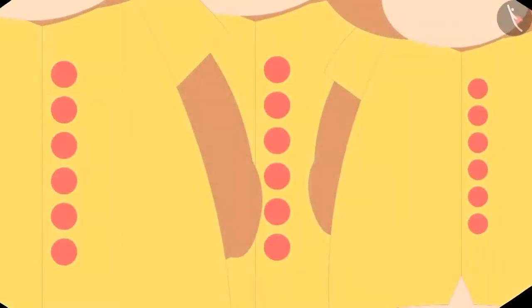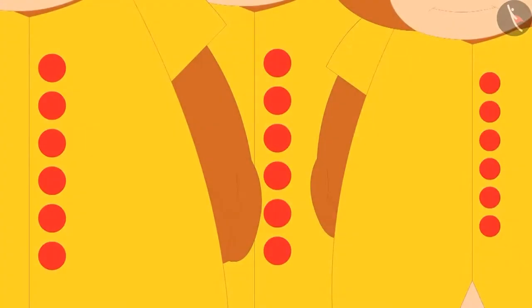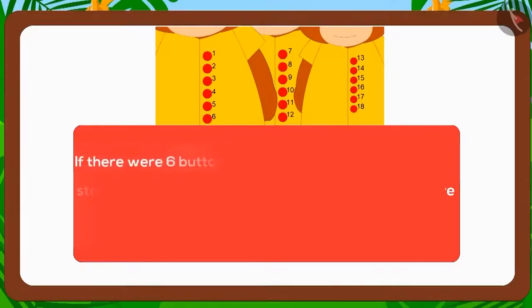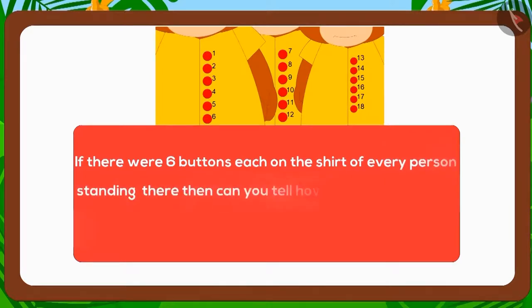Suddenly, Babalu heard some voices. When Babalu tried to see in his half-asleep state, everything looked hazy to him and he could only see eighteen buttons. If every person present there had six buttons each on their shirt, then can you tell how many people were standing there?